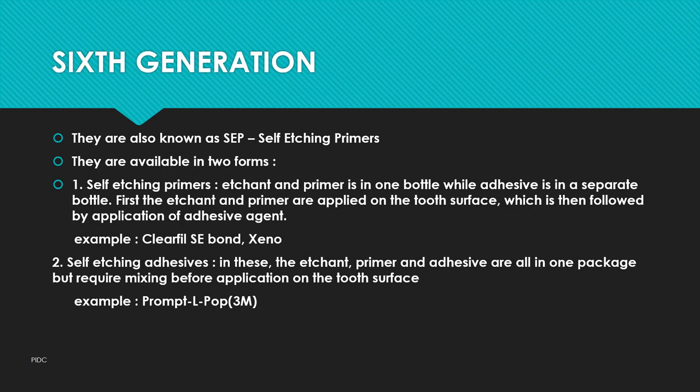Sixth generation, also known as self-etching primers (SEP), are available in two forms. The first is self-etching primers: etching and primer in one bottle with adhesive separate; the etching-primer is applied first, then followed by the adhesive. Example: Clearfil SC Bond. The second is self-etching adhesives: etching, primer, and adhesive are all in one package but require mixing before application. Example: Prompt L-Pop.